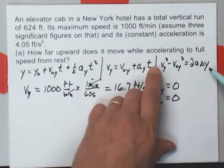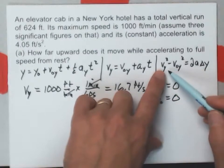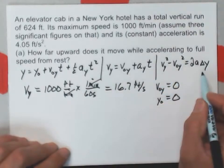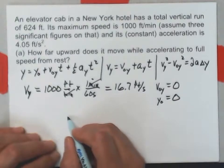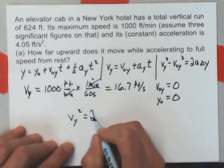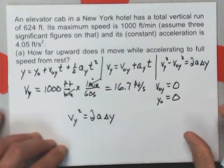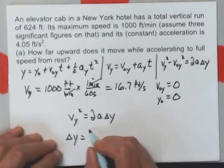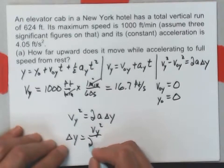With v naught y equals 0, that equation becomes v sub y squared equals 2a delta y. Or delta y is equal to v sub y squared over 2a.